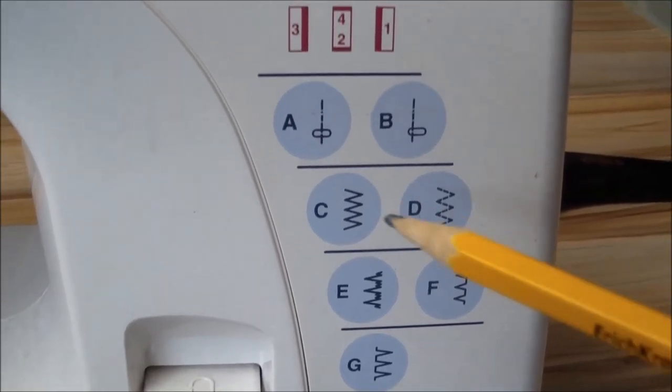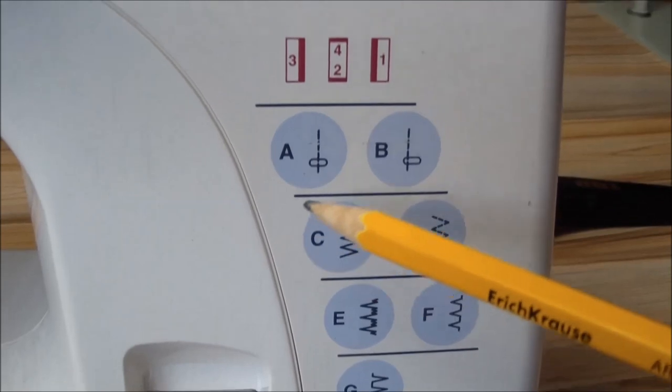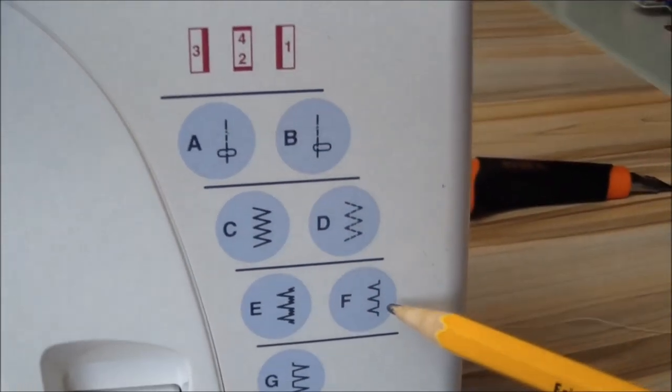The sewing machine must make at least three operations: straight stitch, zigzag, buttonhole.